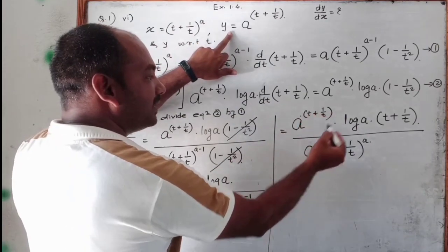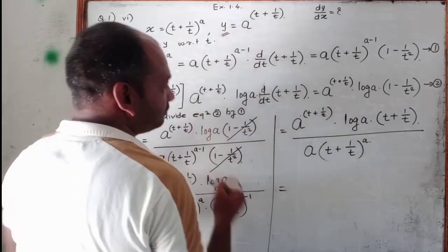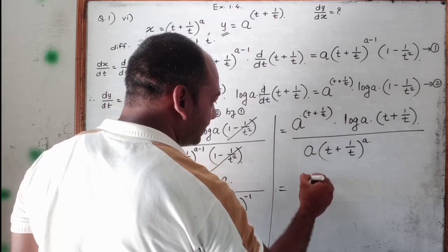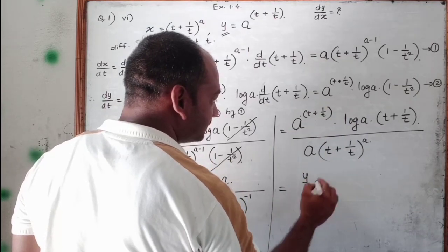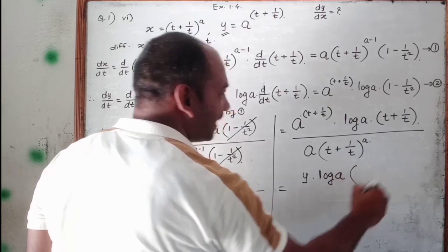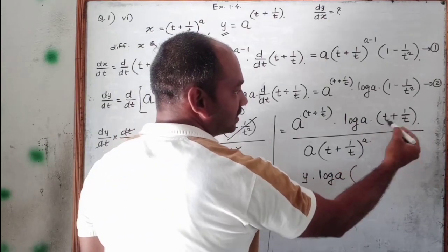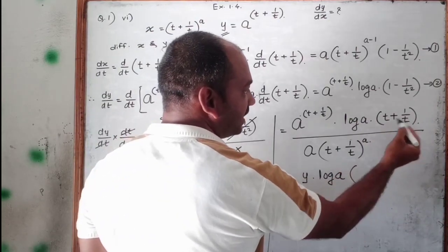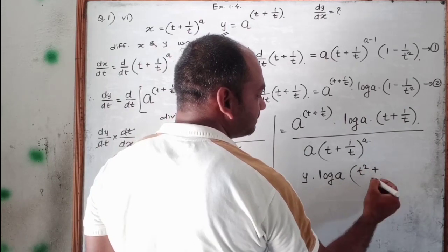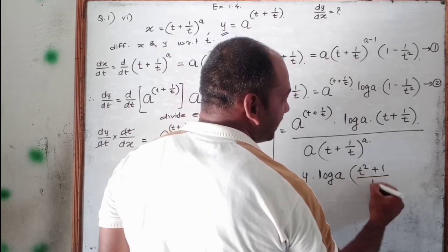So in the place of a raised to t plus 1 upon t we put y. So this becomes y into log a in the bracket. Now add these two terms: t plus 1 upon t gives t squared plus 1, divided by t.